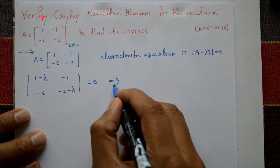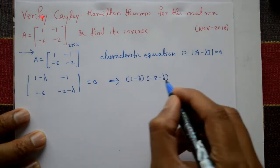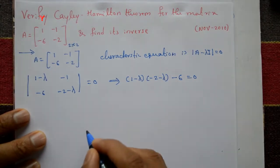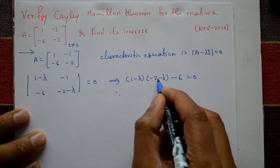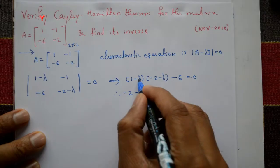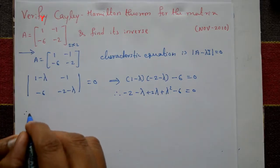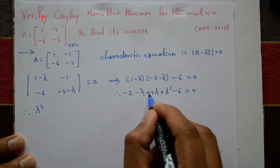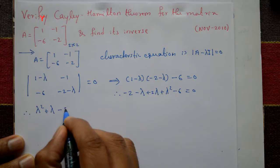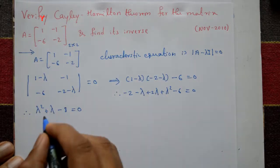Expanding the determinant: (1 - λ)(-2 - λ) minus (-6)(-1) equals 0, which gives (1 - λ)(-2 - λ) + 6 = 0. Opening the brackets: -2 - λ + 2λ + λ² - 6 = 0, therefore λ² + λ - 8 = 0. This is the characteristic equation.